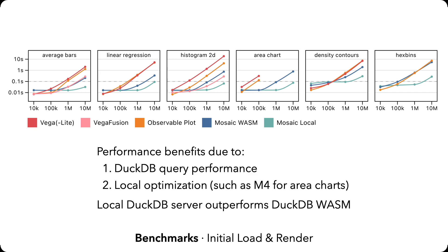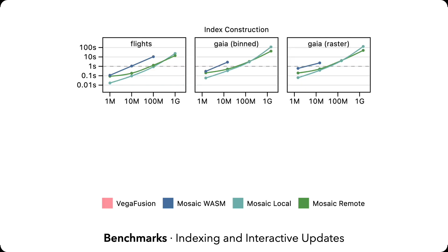We evaluate interactive performance on real-world datasets ranging from millions to billions of records, including the flight delay and Gaia Star Catalog examples seen earlier. Data tile indexes can be built on the fly for up to hundreds of millions of points, but beyond that, pre-computation is desirable.